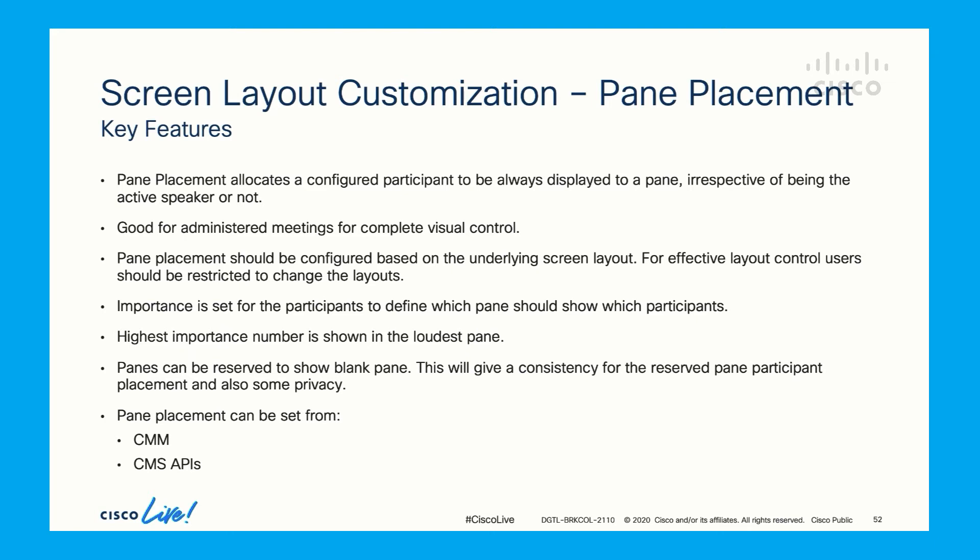Pane placement adds on top of the screen layout by giving the admin the flexibility to choose which participant should be shown in which pane. Without pane placement, participants are given a pane based on their active speaking status. Pane placement works on the principle of participant importance. The higher the importance, the participant is placed in the largest pane. A pane can be reserved to show a blank screen if no participant is assigned for that pane.